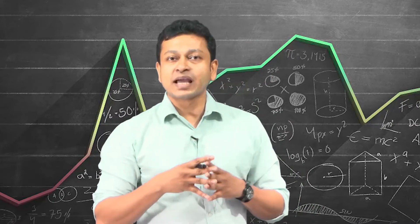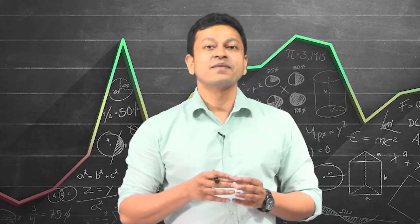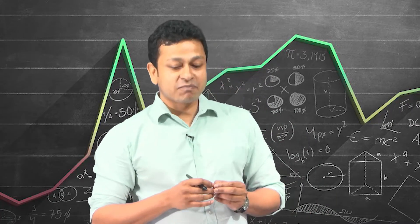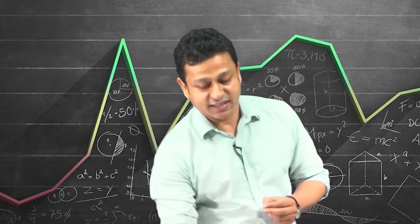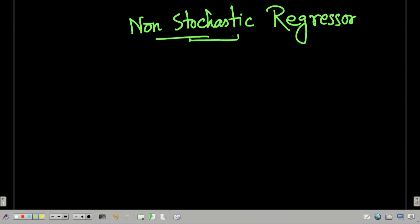How are these two types of regressors actually different? By non-stochastic regressor — we know the meaning of the term stochastic, stochastic always means random. So a non-stochastic regressor is simply a non-random regressor.